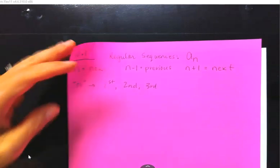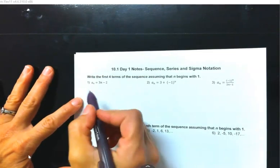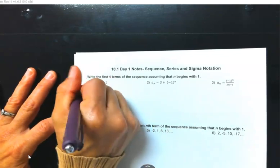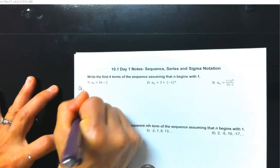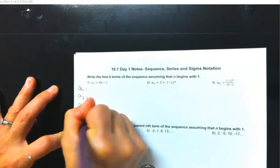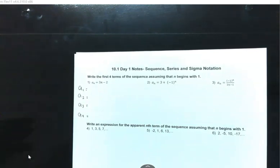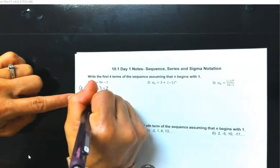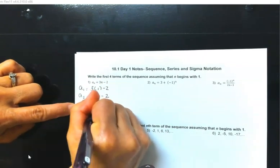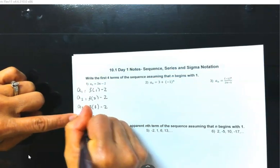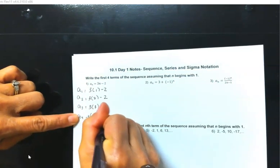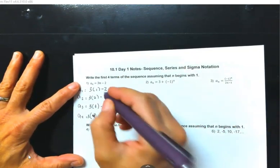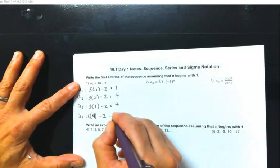Let's get started. For this first term, we have A sub N equals 3N minus 2. We're going to find the first four terms. I'm going to drop the letter N and replace it with A sub 1, A sub 2, A sub 3, A sub 4. The letter N is whatever place you are in the sequence. So the first term is 3 times 1 minus 2. The sequence works out to 1, 4, 7, 10.